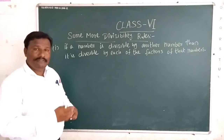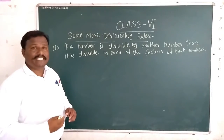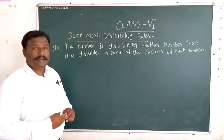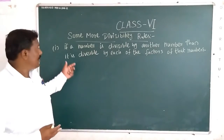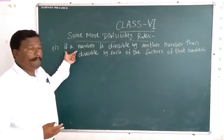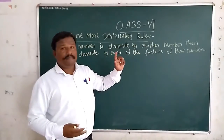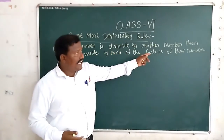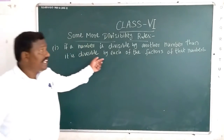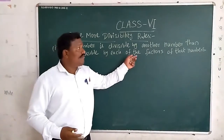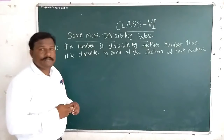Now we are going to discuss some other divisibility rules. So the first rule: if a number is divisible by another number, then it is divisible by each of the factors of that number. What does this mean? Let's look at an example.